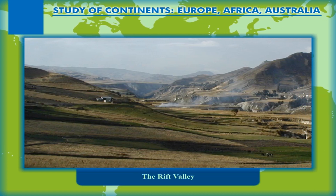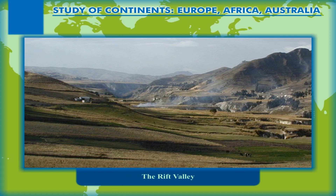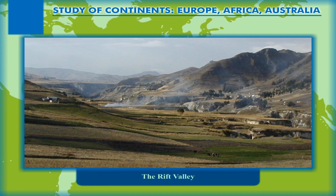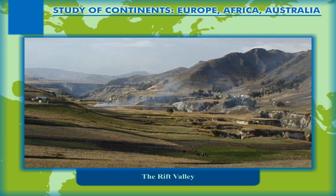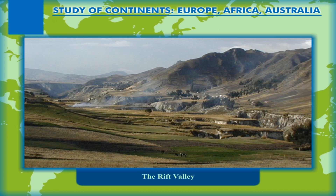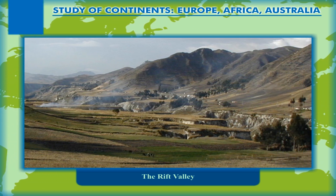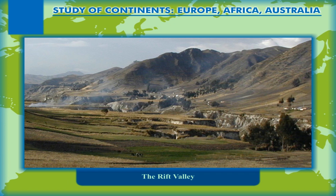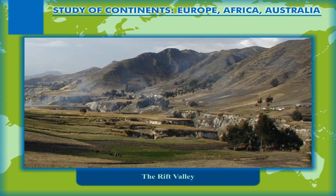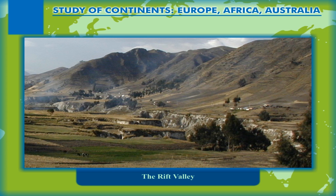The Rift Valley, occupied by Lake Torrens, Spencer Gulf and many small plains, is a flat-bottomed, steep-sided valley which is formed due to subsidence of land between two almost parallel faults.